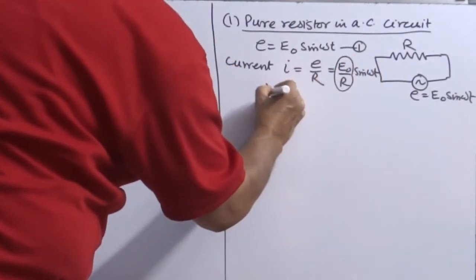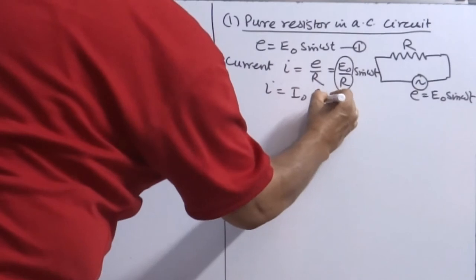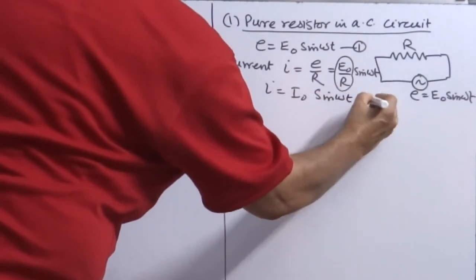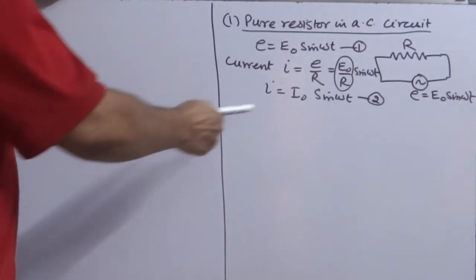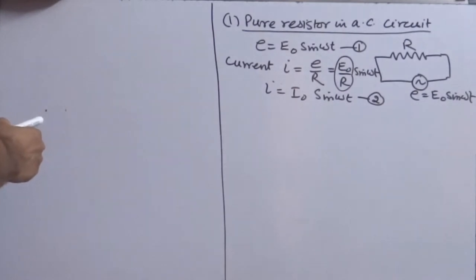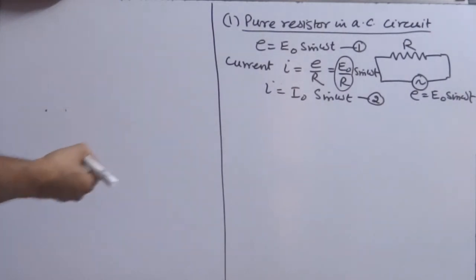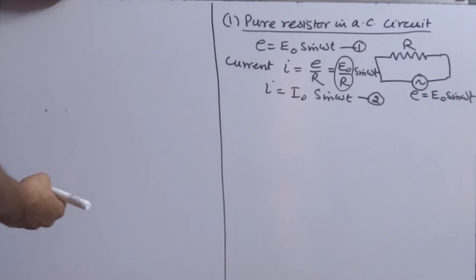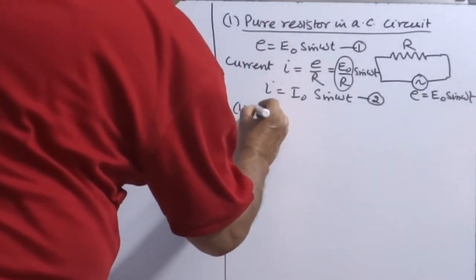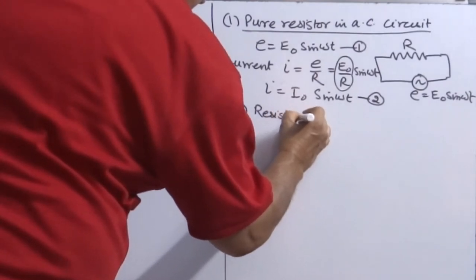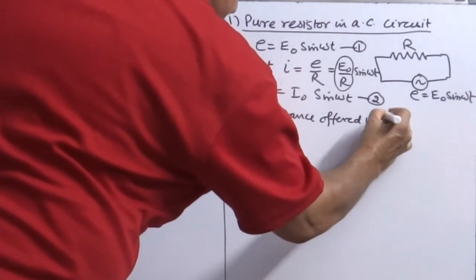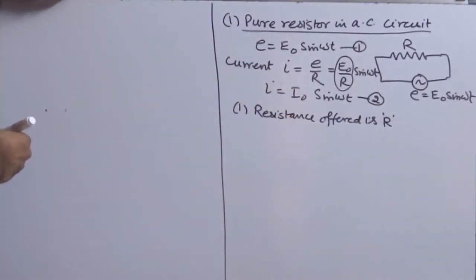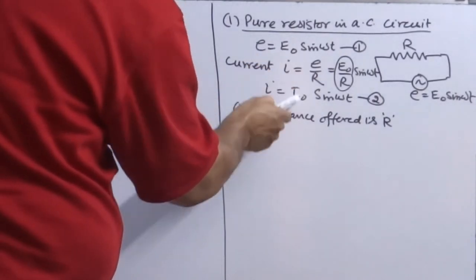So there is no difference — the behavior is the same. The resistance offered by the resistor in AC circuit is R, the same as it offers in DC. So the first conclusion is: resistance offered is R. For the second conclusion, we look at the phase difference. How do we find the phase difference? First, check whether the varying function is the same in both equations.